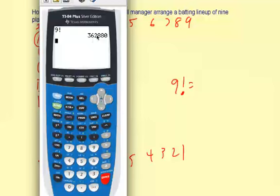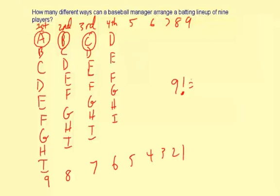So 9 factorial. That's a big number: 362,880. So that's how many different ways the manager could arrange a lineup using 9 players and 9 positions.